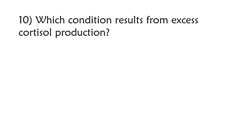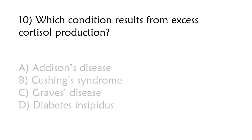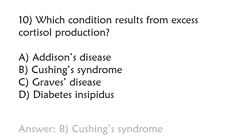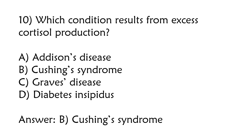Which condition results from excessive cortisol production? Addison's disease, Cushing's syndrome, Graves' disease, Diabetes insipidus. The correct answer is Option B: Cushing's syndrome.